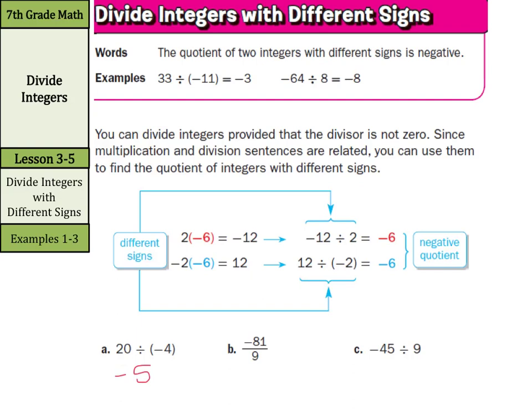For negative 81 over 9 — now this looks like a fraction, and it also means the same thing as division. So we have negative 81 divided by 9 is another way of reading that. And we have a negative divided by a positive, which is negative. And our last one, negative divided by a positive, we have 5, but it's a negative 5.